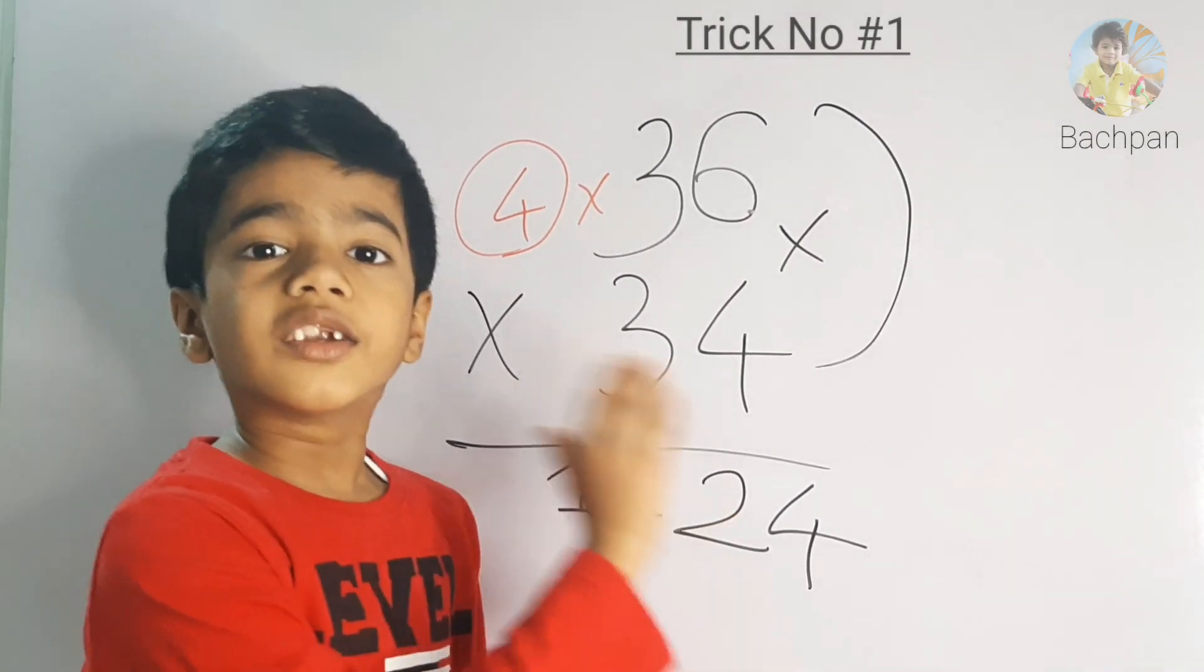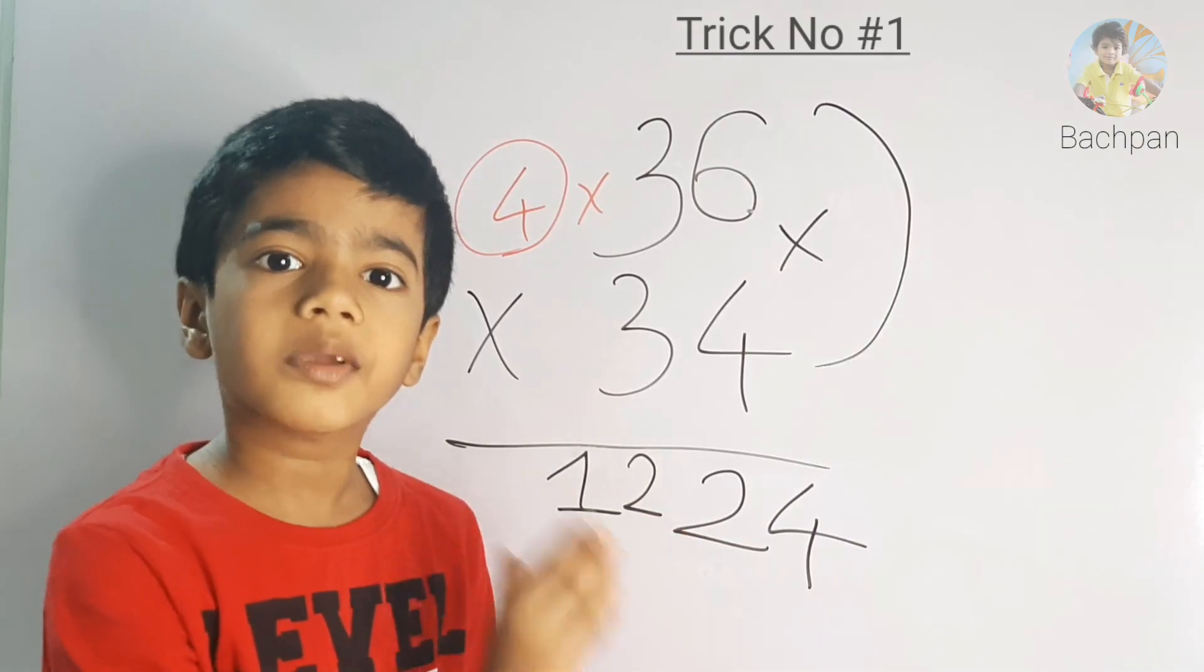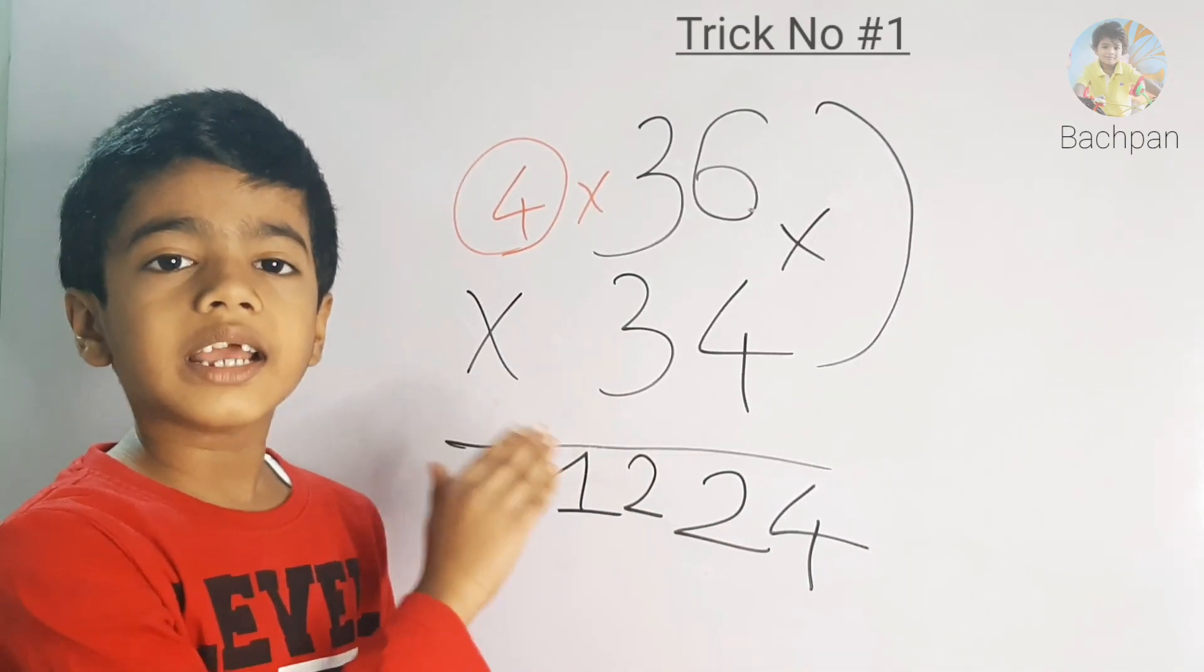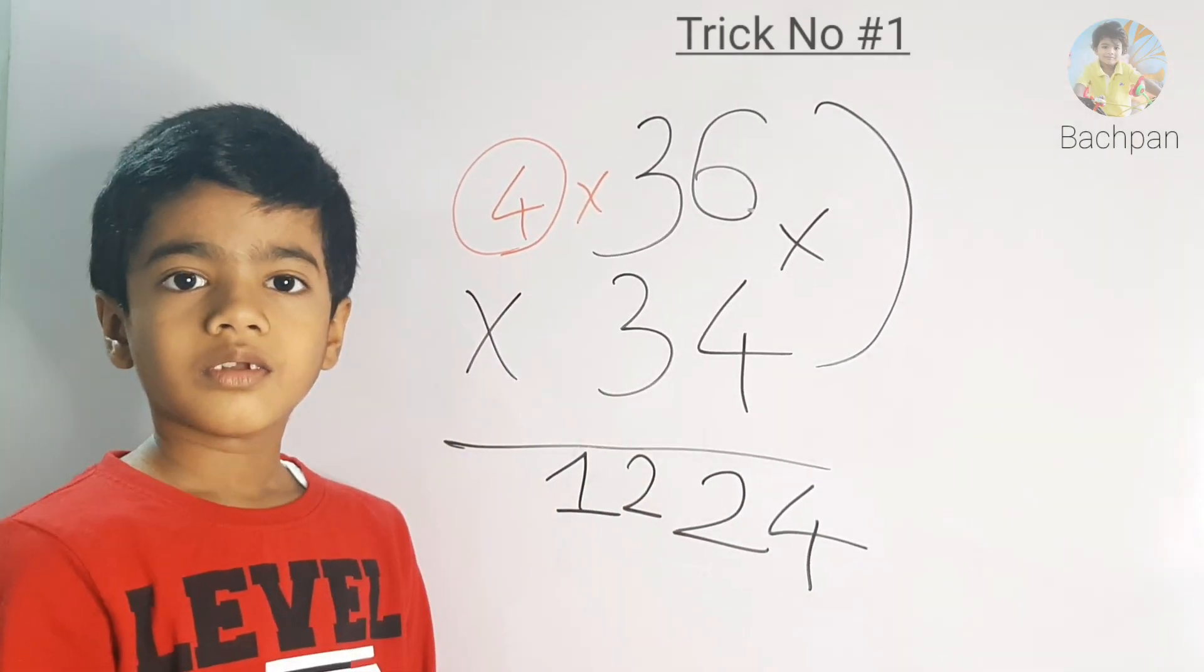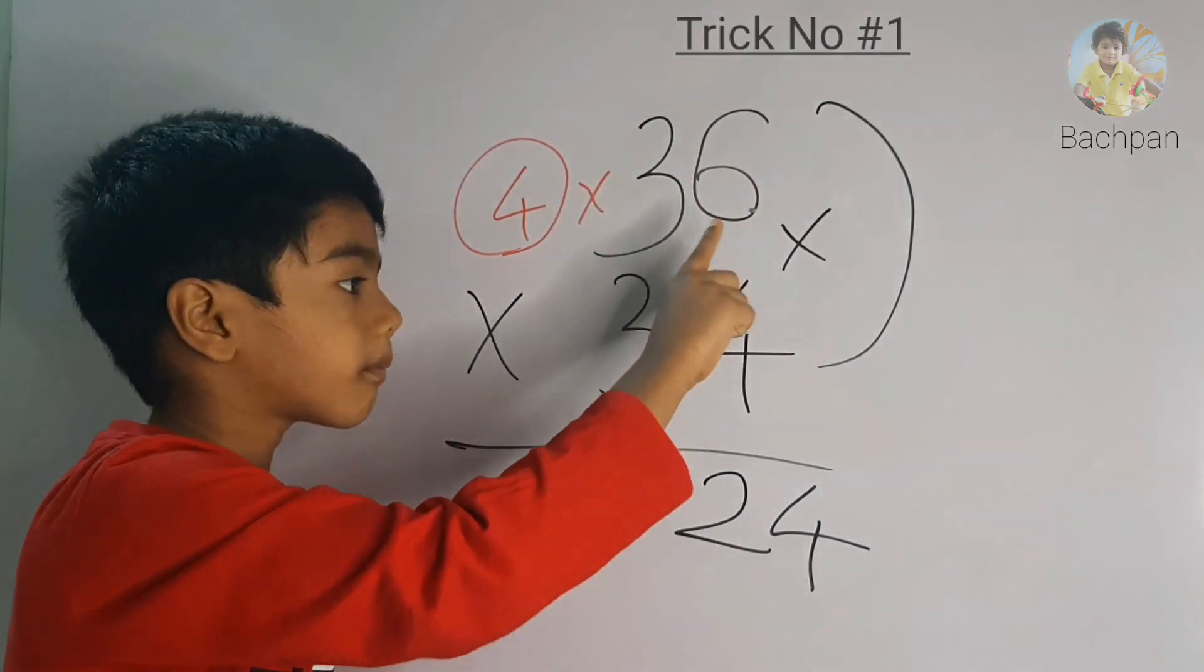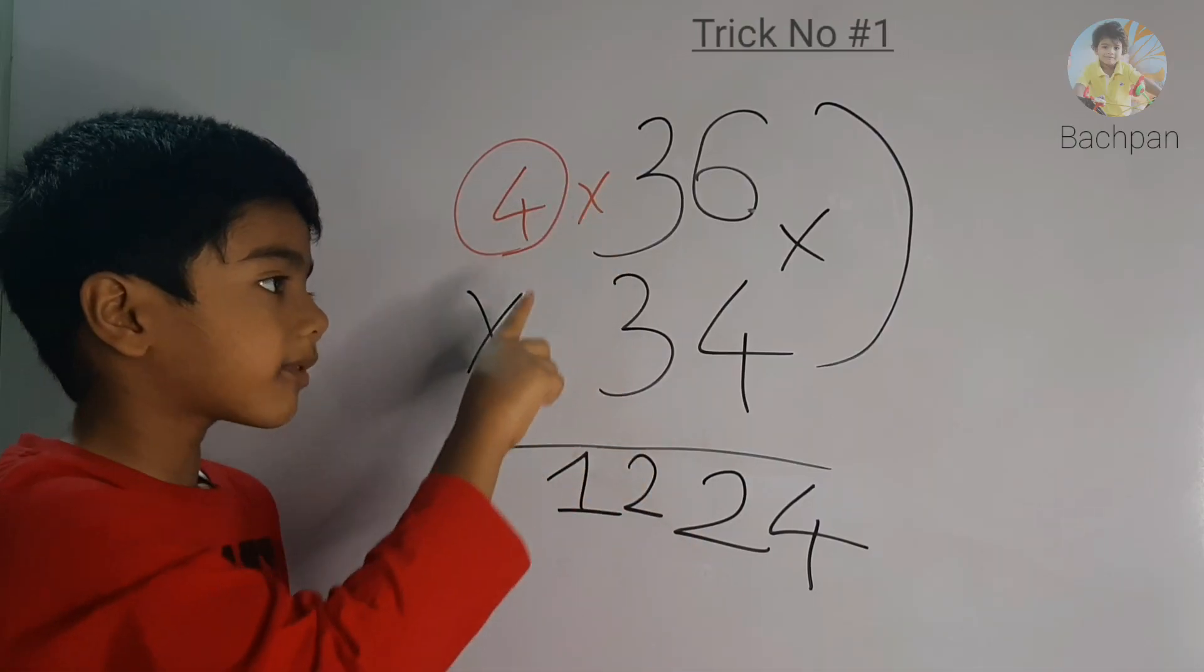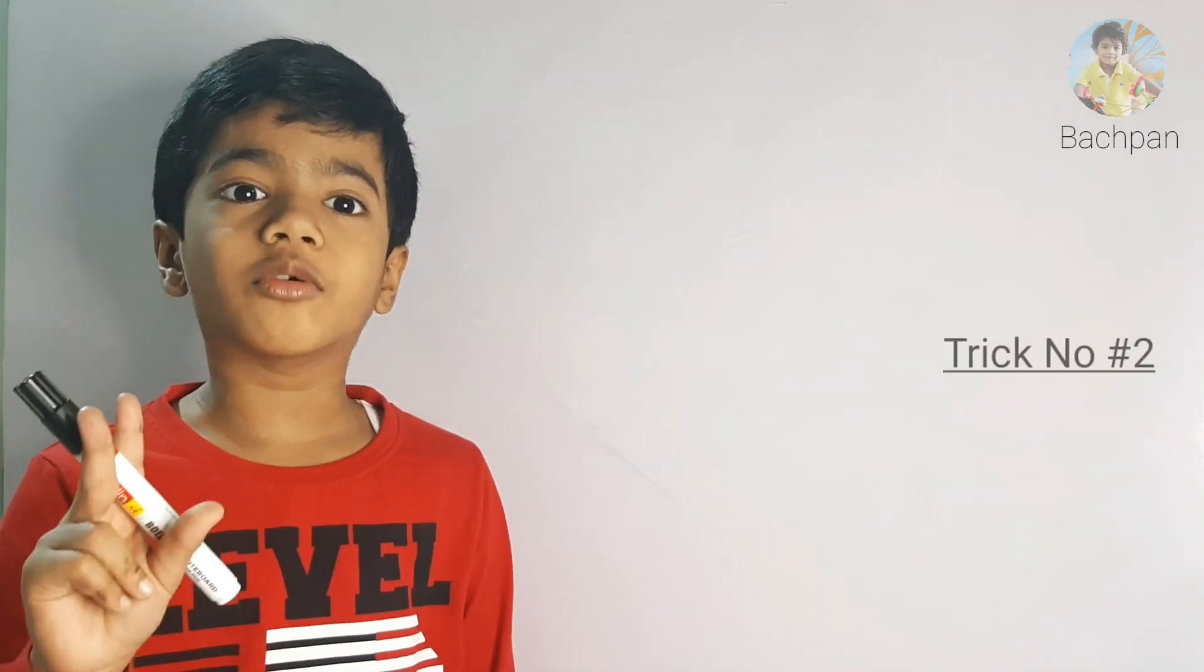Please note this trick will only work when the right side sum is 10 and left side has the same number. For example, 6 plus 4 is 10 and 3 we have same. Trick number 2.